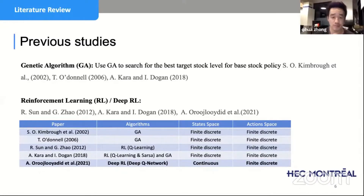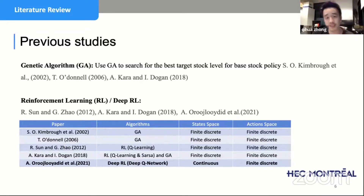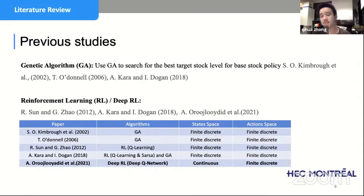To address this issue, a recent 2021 study used a DQN — a Deep Q-Network — to solve the problem. It partially solved the issue because it can deal with a continuous state space, but the action space is still discrete.